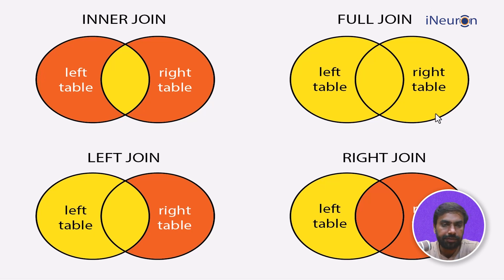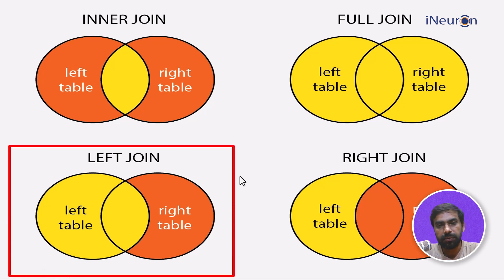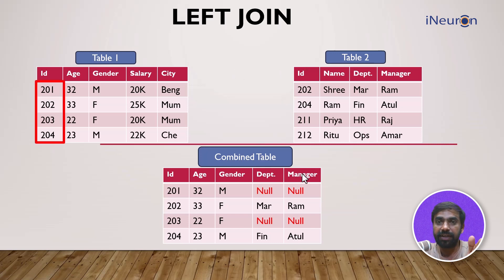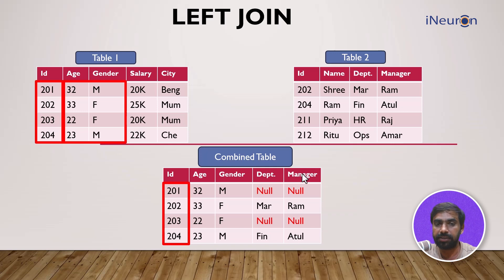Now the last two joins are left join and right join. Let's start with the left join. As the name suggests, it takes the entire data from the left table and inputs the common data. The example gives you the details of table one, table two, and the combined data. Since table one is the left table, it takes all the entire data of table one and inputs it into the combined result.